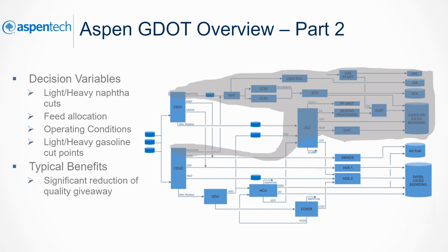GDOT achieves these objectives by controlling the light and heavy naphtha cuts, feed allocation between parallel units, operating conditions of reforming and fluidized catalytic crackers, and light and heavy gasoline cuts. A typical benefit of using GDOT to optimize gasoline production is a reduction of quality giveaway.